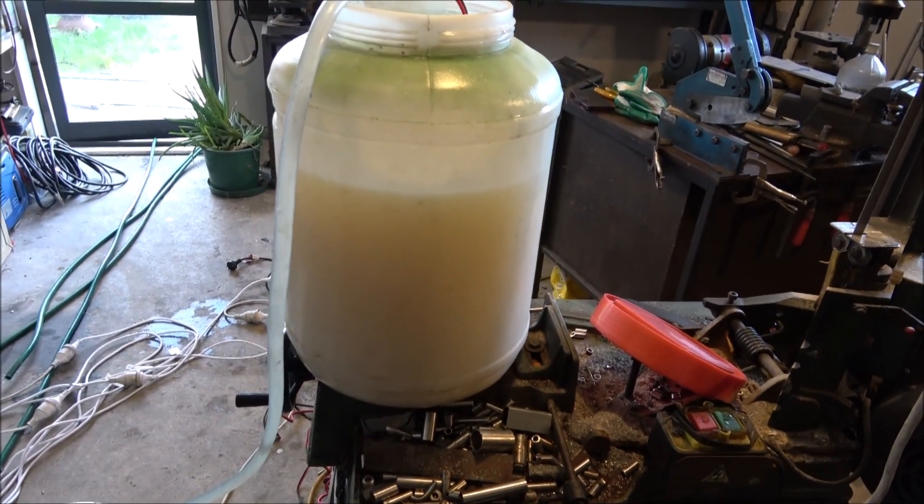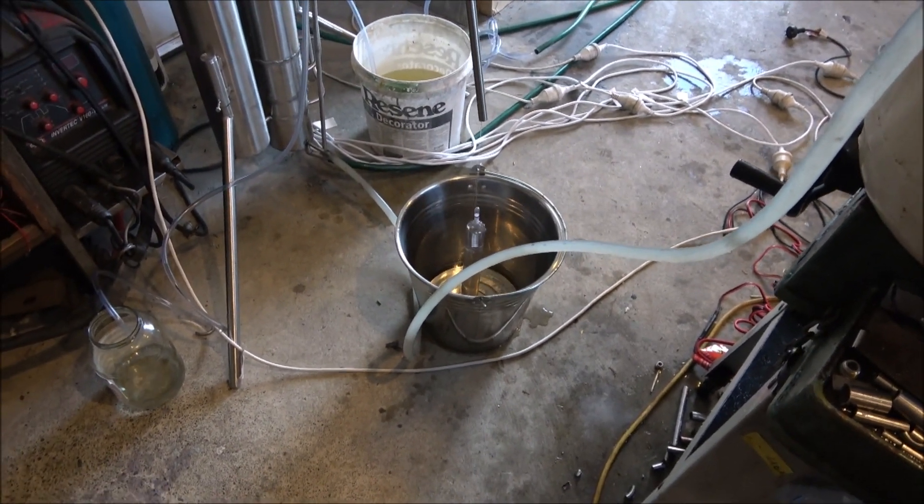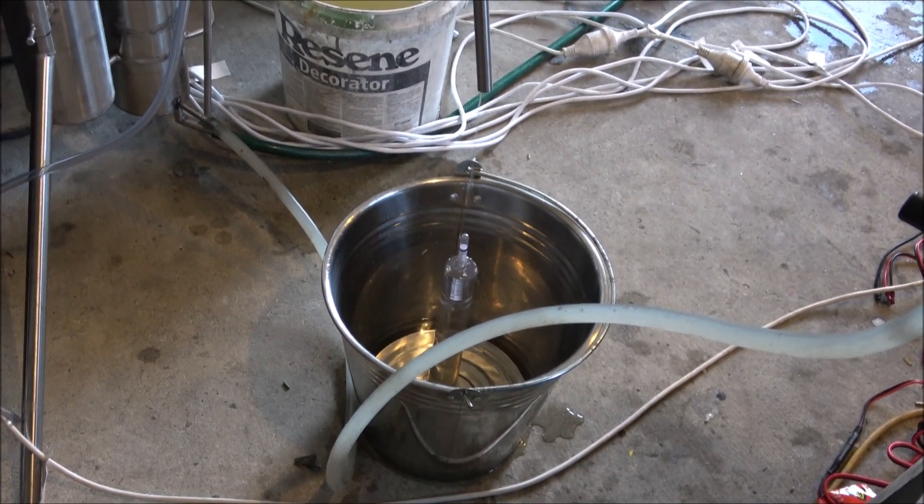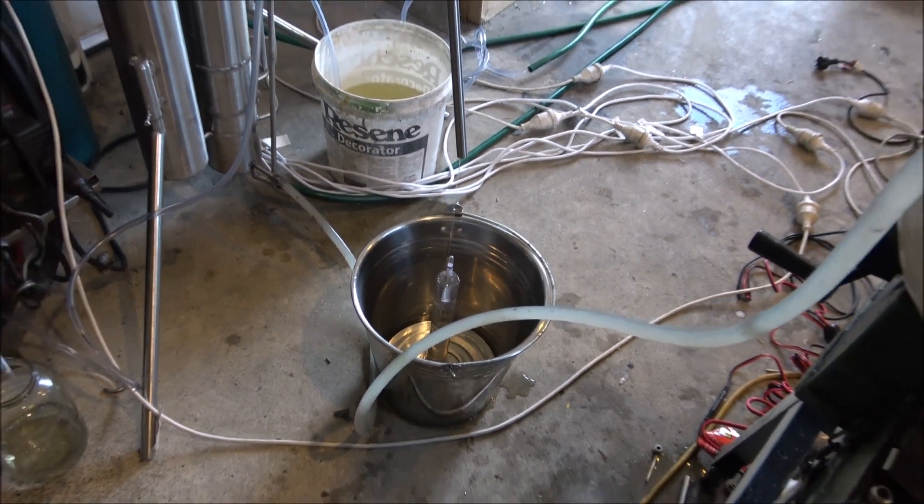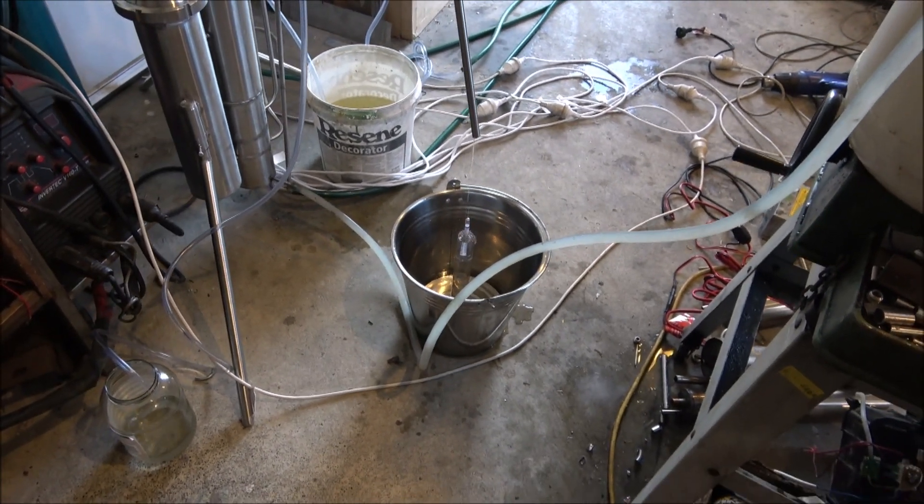It's a sugar-based wash and we're running at about 4.5 liters per hour at 90%, maybe a little bit less. To increase the percentage, all you need to do is increase the output of the product, which will increase the amount of reflux.